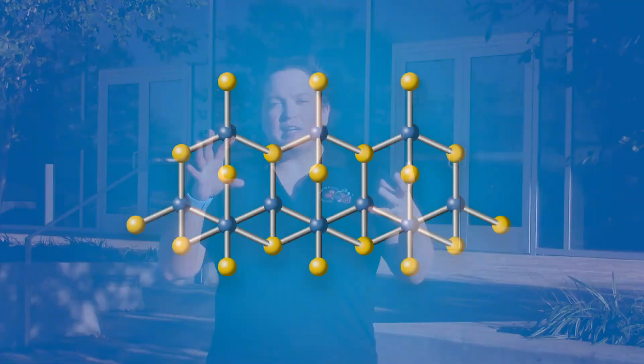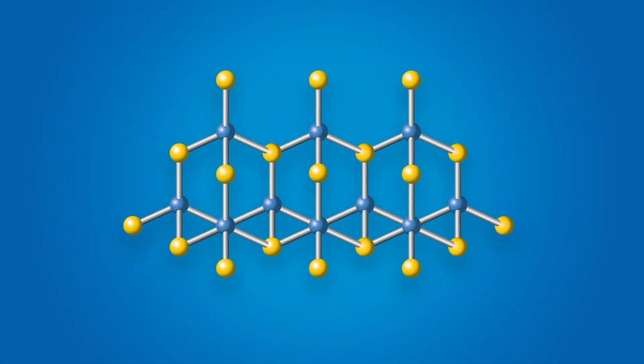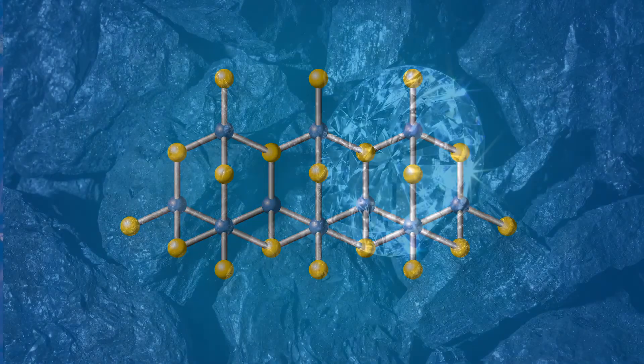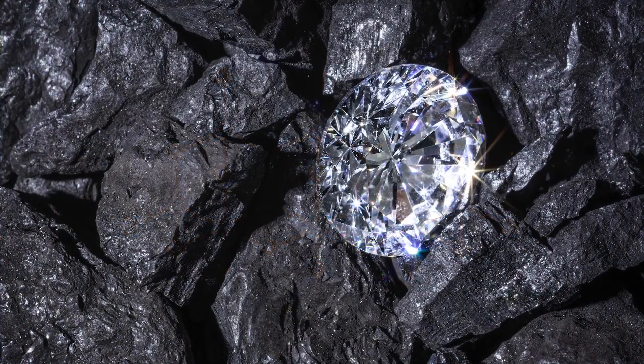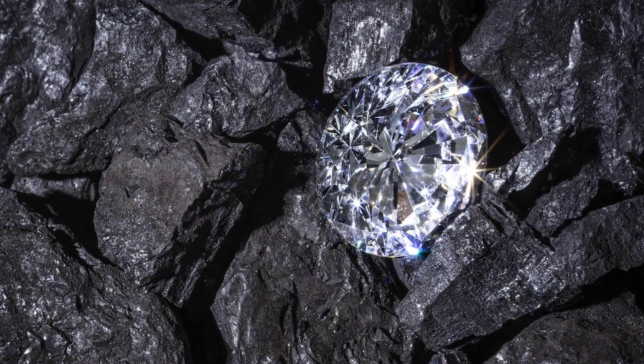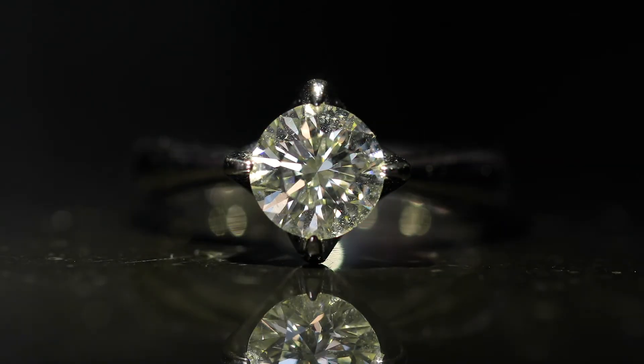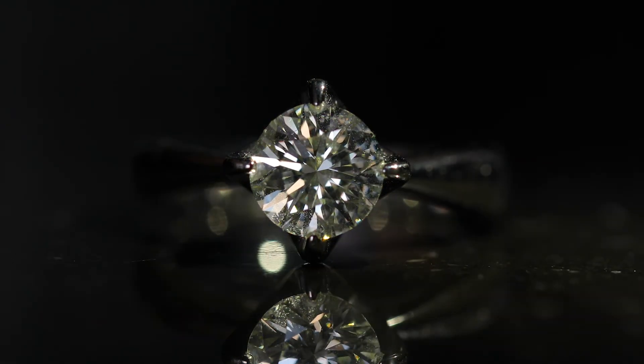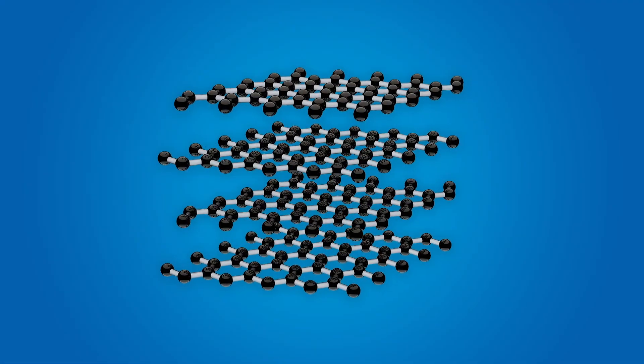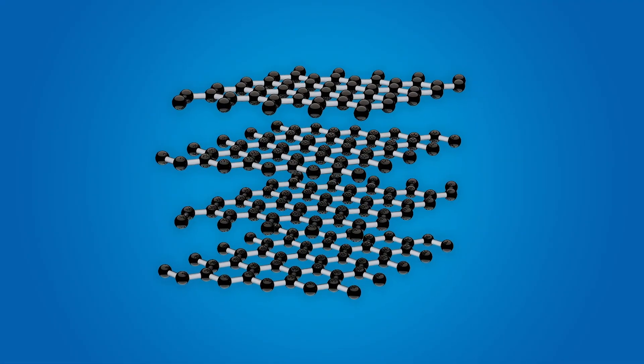One form of carbon is diamond. This is when the carbon atoms form a three-dimensional bonded structure. It makes a very, very hard substance and a little shiny. We also have two-dimensional bonded sheets of carbon — we call that graphite.